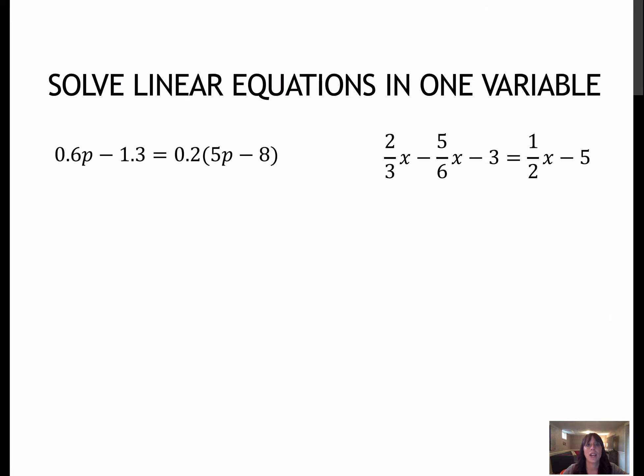Here are a couple that have decimals and fractions. So one thing that might be helpful to you as you go throughout this course is to know how to clear decimals and clear fractions. So when you clear decimals, it means that we're going to multiply by something that makes all of the decimals go away. So in this case, notice that my biggest decimal is a 10th. So if I take everything times 10 on each side, watch what happens.